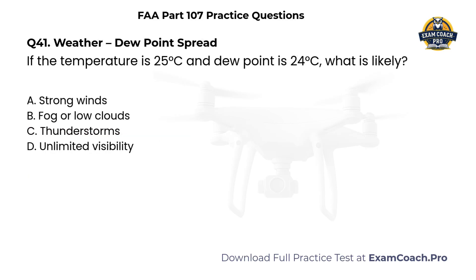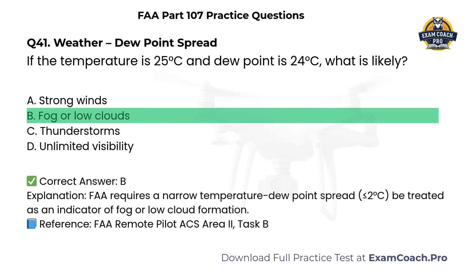Weather — Dewpoint Spread. If the temperature is 25 degrees Celsius and dewpoint is 24 degrees Celsius, what is likely? A. Strong winds. B. Fog or low clouds. C. Thunderstorms. D. Unlimited visibility. Correct answer: B. Fog or low clouds. The FAA requires a narrow temperature dewpoint spread of 2 degrees Celsius or less be treated as an indicator of fog or low cloud formation.